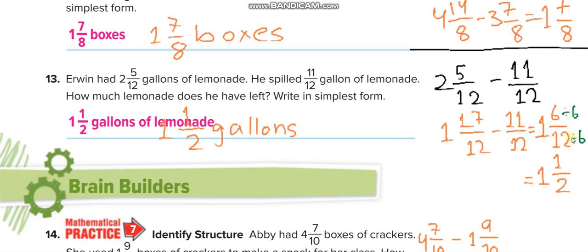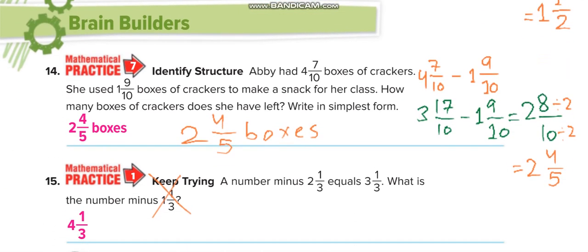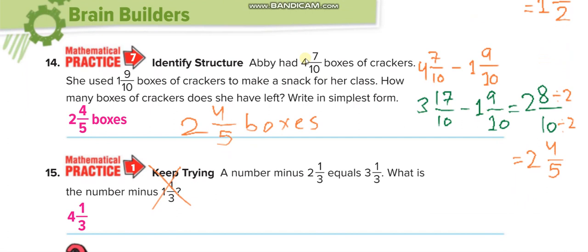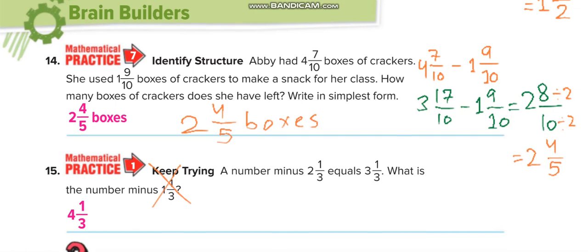17 minus 11 equals 6 over 12, simplified by dividing by 6 up and down: 1 and 1 over 2. For the next: 4 and 7 over 10 minus 1 and 9 over 10. Since 9 is bigger than 7, we take 1 carry from 4, making it 3, and 10 plus 7 equals 17 over 10, minus 1 and 9 over 10. Now you can subtract easily and simplify.